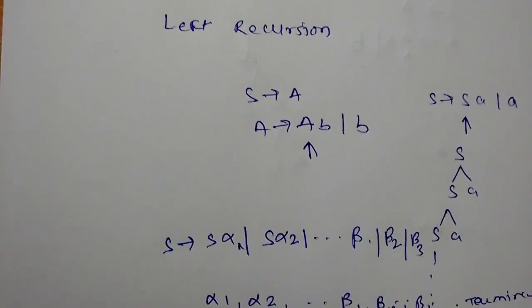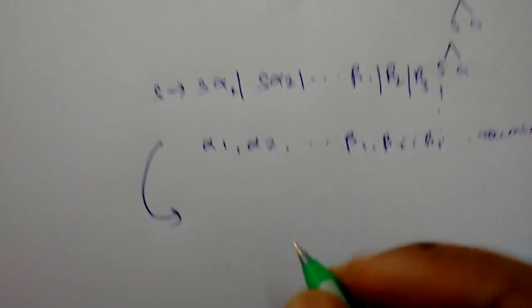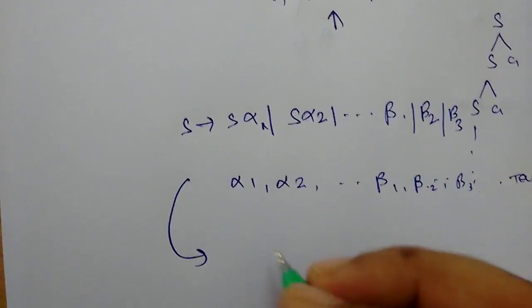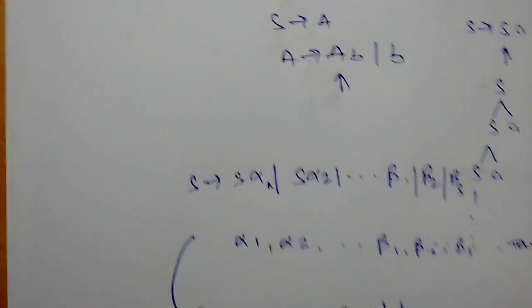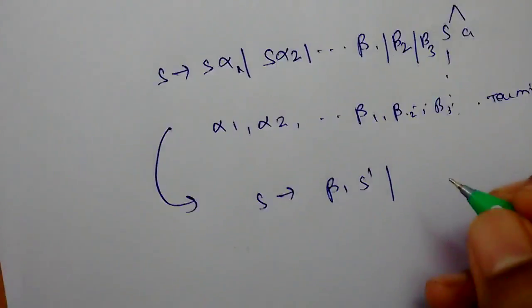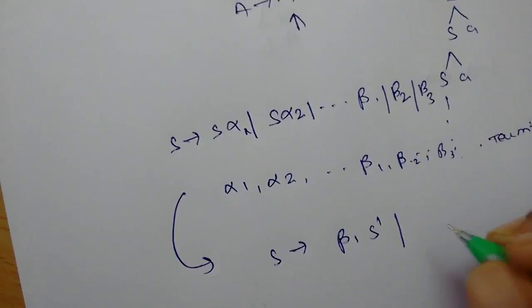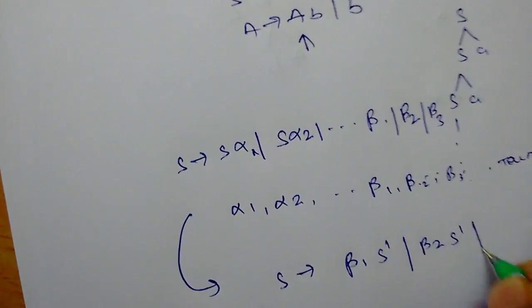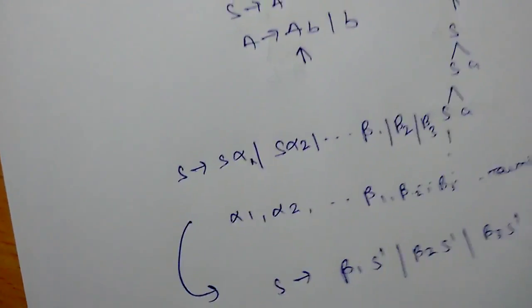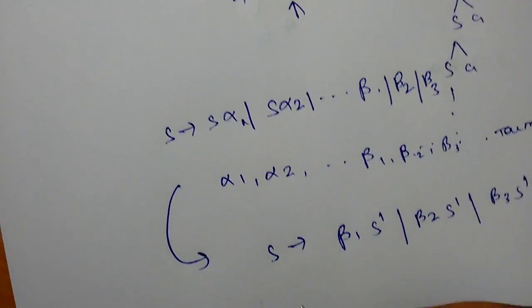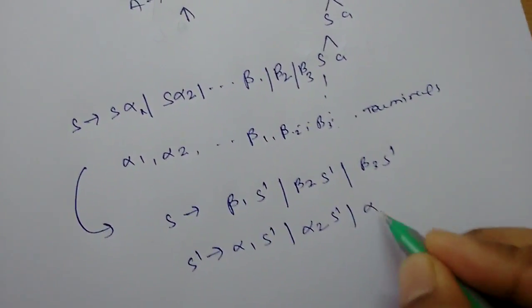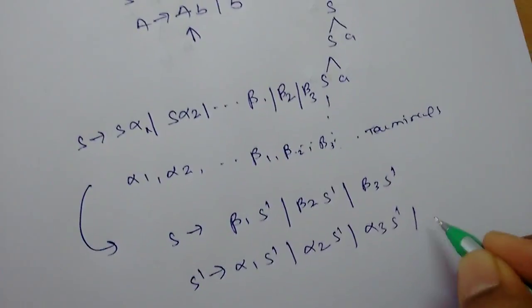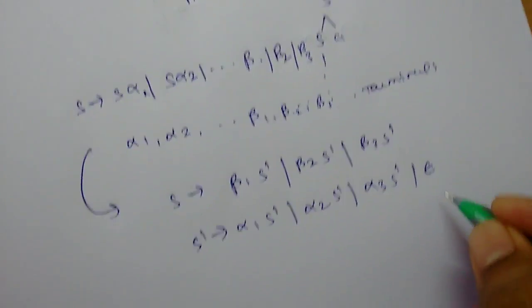We can rewrite it as: S goes to beta1 S dash, beta2 S dash, beta3 S dash, where S dash is a temporary variable. And S dash goes to alpha1 S dash, alpha2 S dash, alpha3 S dash, and epsilon.